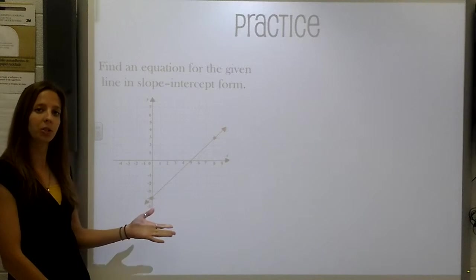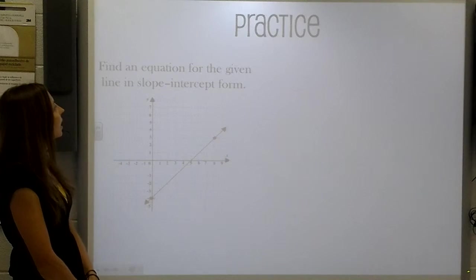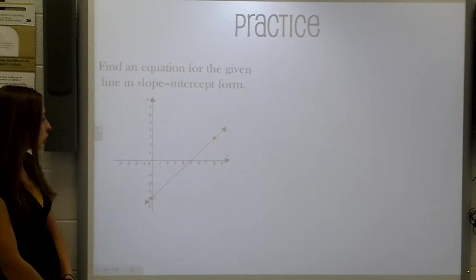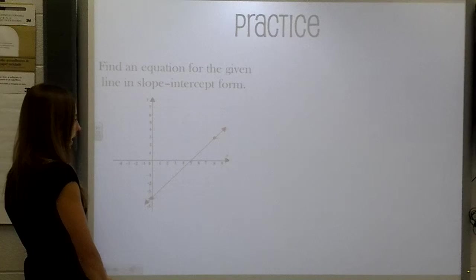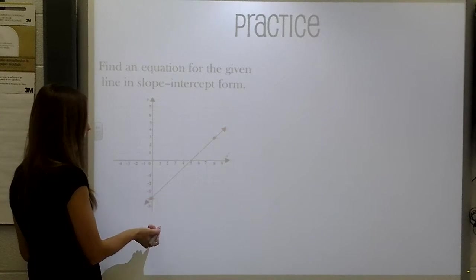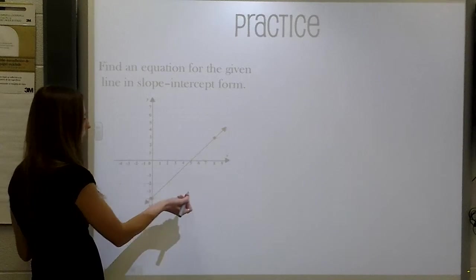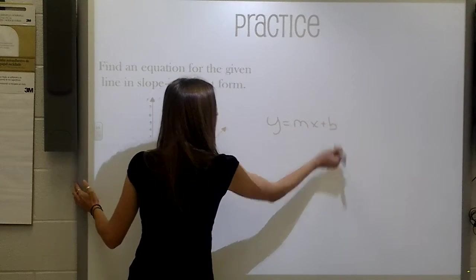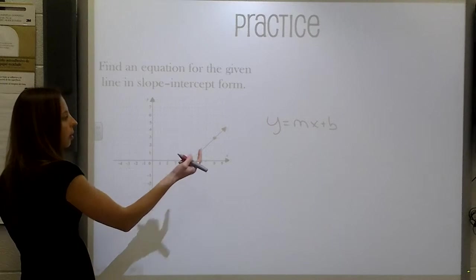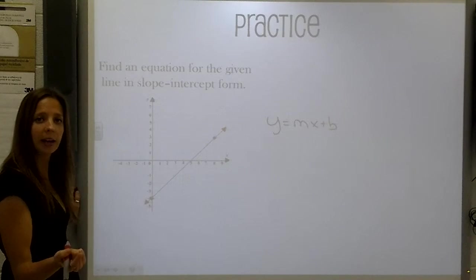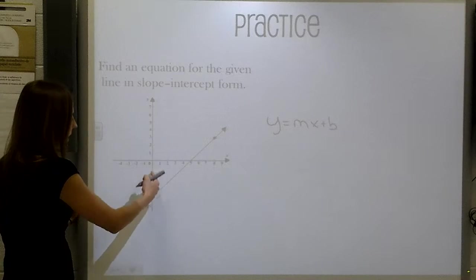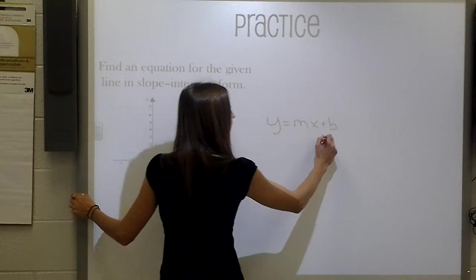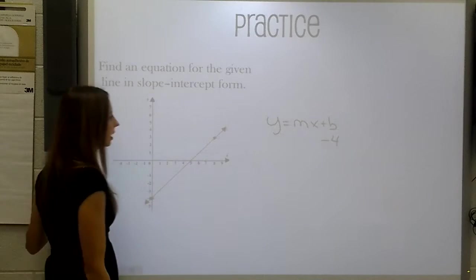Now we have a problem where we do have a graph involved. It says define an equation for the given line in slope intercept form. So let's go ahead and take a look at the points that we've been given. We know that our formula is y equals mx plus b. Well, b represents the y-intercept where the line crosses the y-axis. We now know, based on this knowledge, that b is going to represent negative 4.